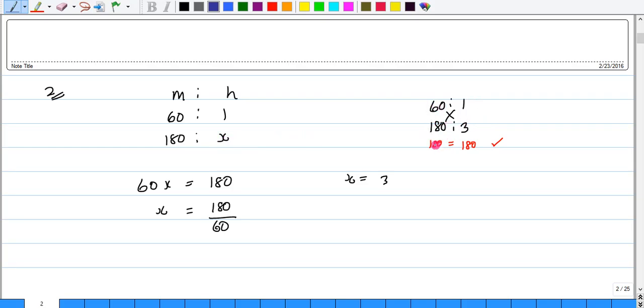60 times 3 would give us 180 on this side, and 180 times 1 would give us 180 on that side. Again, we know that if we end up with the same figure on both sides, then our equation is balanced. Our answer for number two is 3.